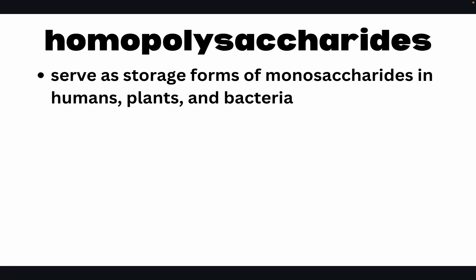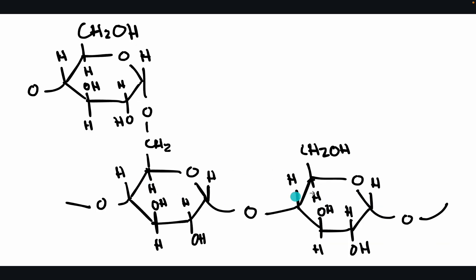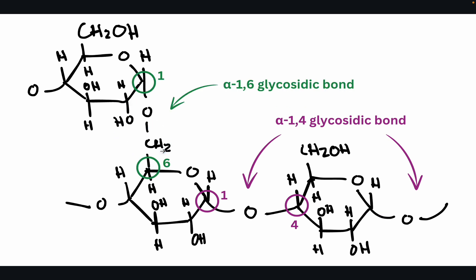We will focus on homopolysaccharides because they serve as storage forms of monosaccharides in humans, plants, and bacteria. Starch is the storage form in plants and the main carbohydrate in the human diet — bread, cereal, and rice are all starch. Starch is made of glucose units. Looking at a small portion, the bond is an alpha-1,4-glycosidic bond. There is also branching where an alpha-1,6-glycosidic bond forms, because C1 of one glucose connects to C6 of another.